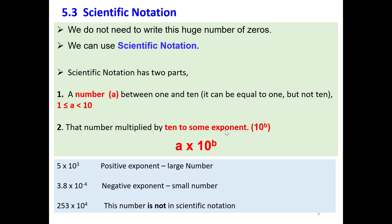That is 10 to some exponent. The exponent 'b' can be a positive number or a negative number. Any number in scientific notation has two parts: the number part, where 'a' must be between 1 and 10 — equal to 1 but not equal to 10 — and the power of 10 part.